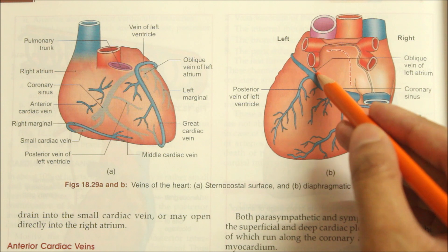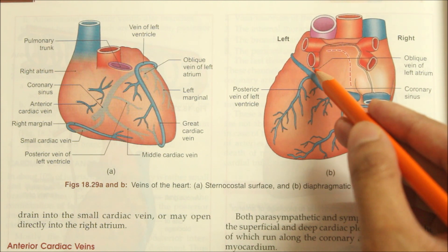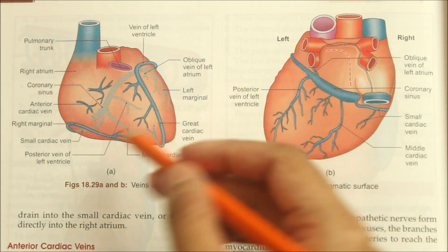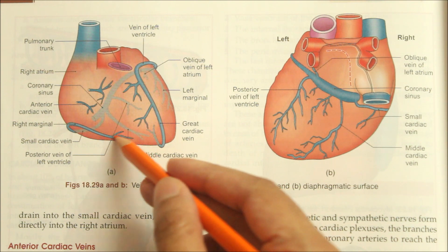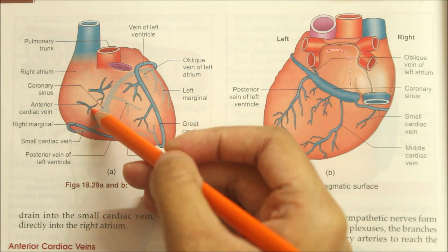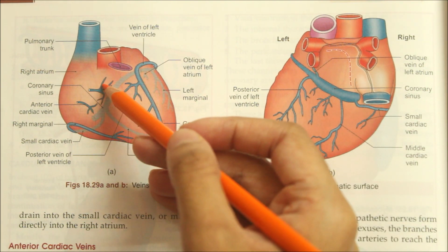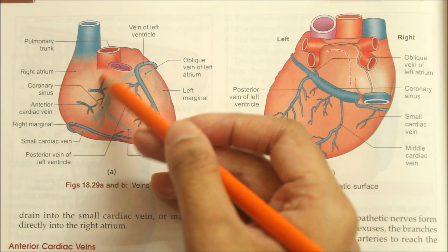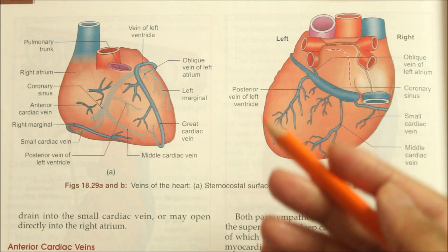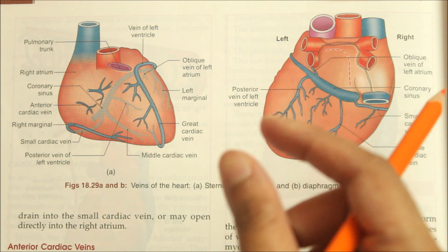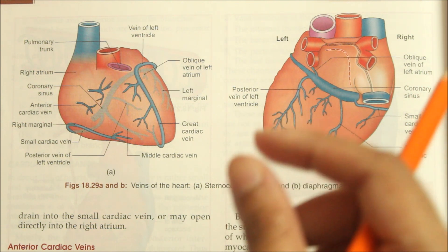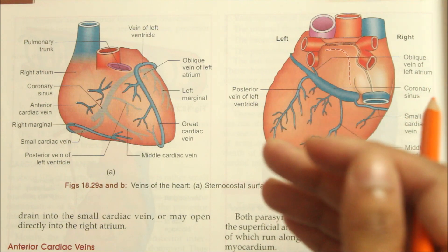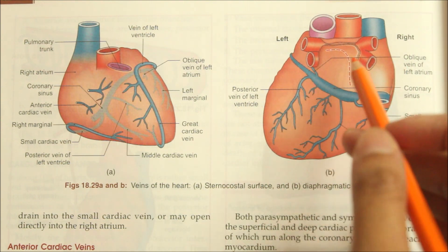The oblique vein of the left atrium is a small vein running on the posterior surface, also called the oblique vein of left atrium of Marshall. Finally, there is the right marginal vein that accompanies the marginal branch of the right coronary artery. Then we have the anterior cardiac veins — 3 or 4 small veins that run parallel to one another. Finally, we have the venae cordis minimae, or Thebesian veins, or smallest cardiac veins, which are numerous small valveless veins present in all four chambers of the heart.